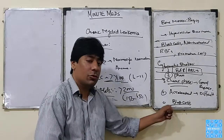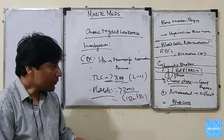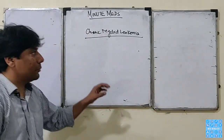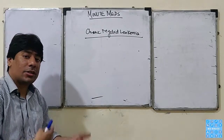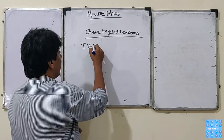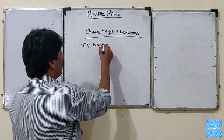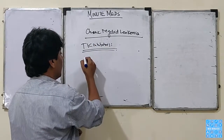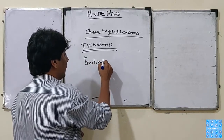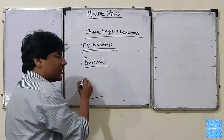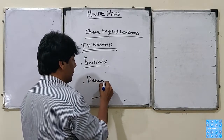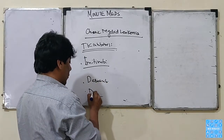How do we treat it? We have been lucky that we have developed drugs called tyrosine kinase inhibitors. Imatinib is the first line. Others are also used, such as dasatinib or nilotinib.